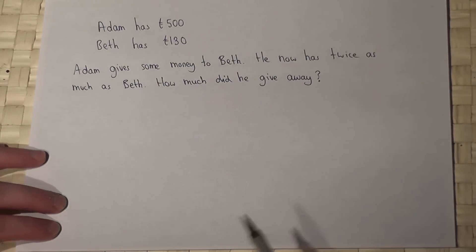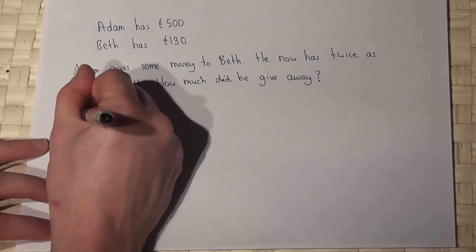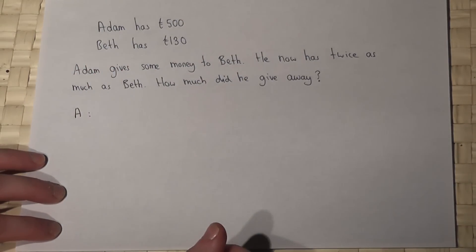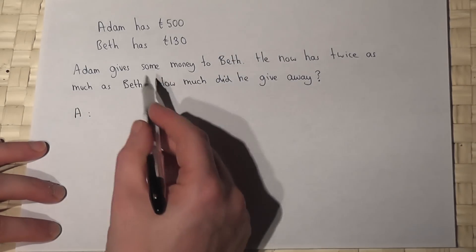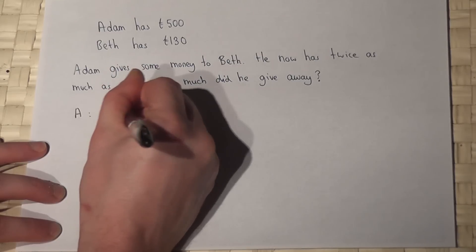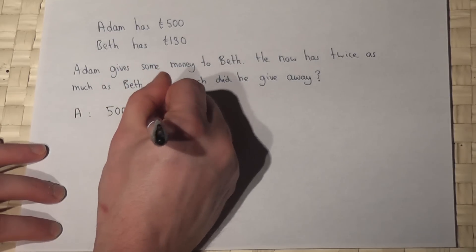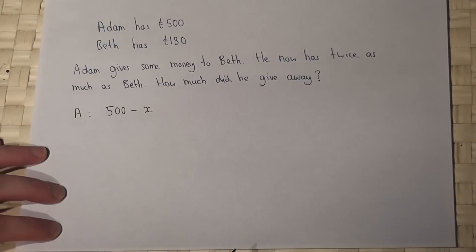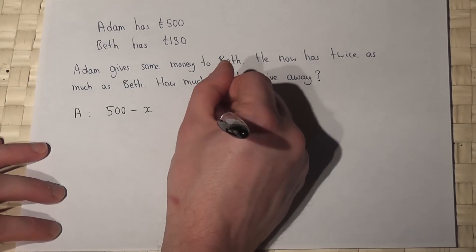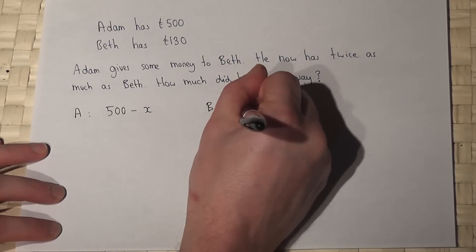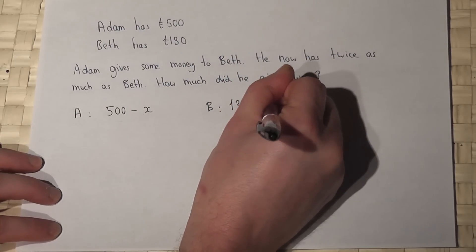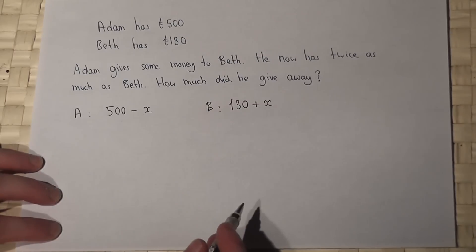Let's call the amount of money which Adam gives to Beth X. Once he gives the money to Beth, he will have 500 pounds take away X, his money will decrease. But once he gives this to Beth, she will have 130 plus X, his goes down, hers goes up.